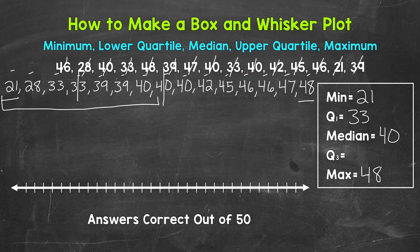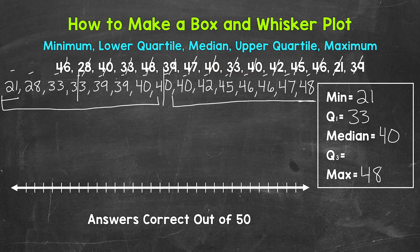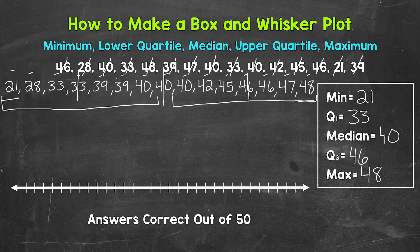Now let's find the third quartile, also called the upper quartile. This is the 75th percentile — the median of the upper half of the data. There are seven numbers in the upper half as well, just like the lower half. So we have three numbers on each side, and the third quartile is the number in the middle, which is 46.